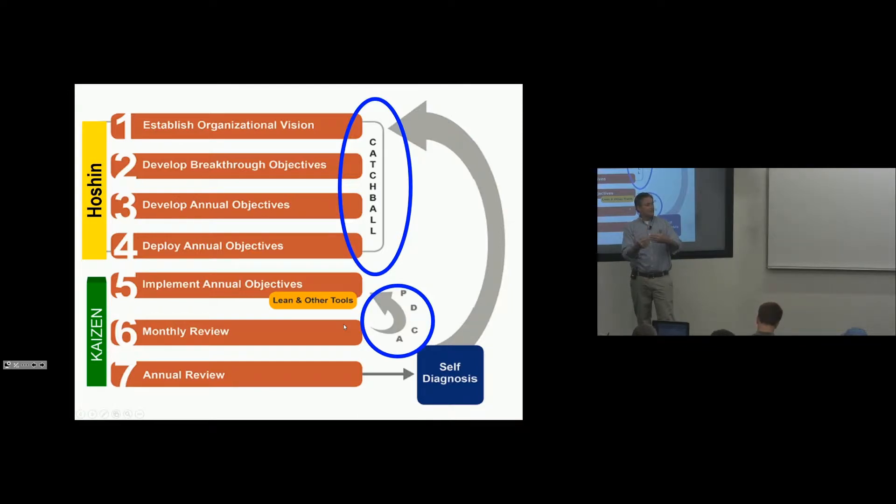Now that would be the next level of management. And you're going back and forth on what this vision should be and then you're going down to the next level from you. And you're throwing it down saying, here's what I think our key breakthrough objectives should be. And your organization is throwing the ball back to you, trying to negotiate that around the vision. And that goes all the way down to the supervisor running the process on the floor and annual objectives.